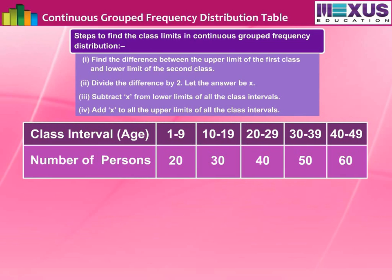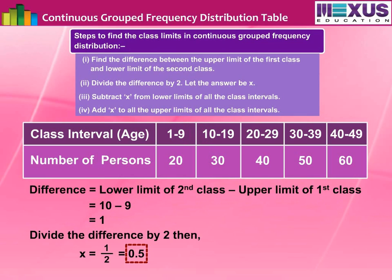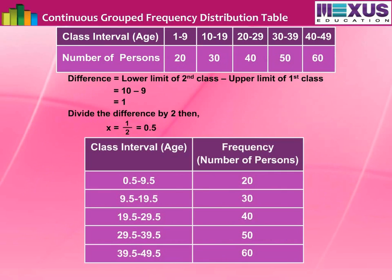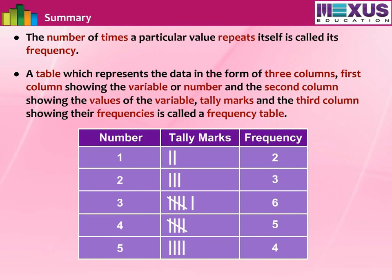In this table, the classes given have gaps. Hence we rewrite the classes using the exclusive method. Find the difference between the upper limit of the first class and the lower limit of the second class. Subtract 0.5 from the lower limits and add 0.5 to the upper limits. Now we get a continuous frequency distribution table with true class limits as shown. Let us revise all that we have learned in this module about the frequency table.